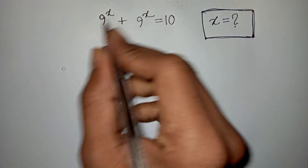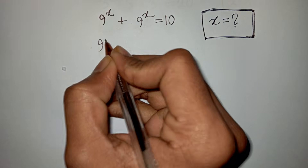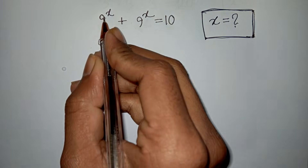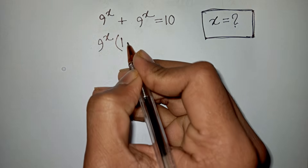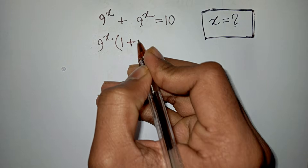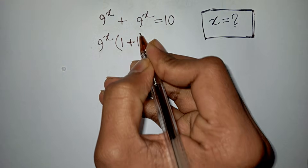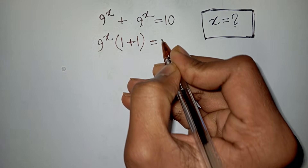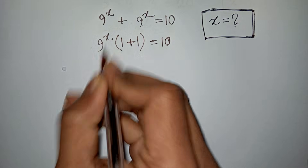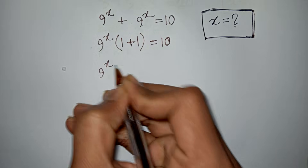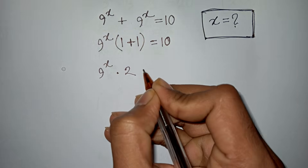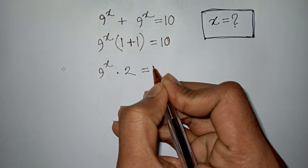First, from the left side we take 9 to the power x as a common factor. So 9^x comes out of the bracket, giving 9^x times (1 + 1), which equals 10.